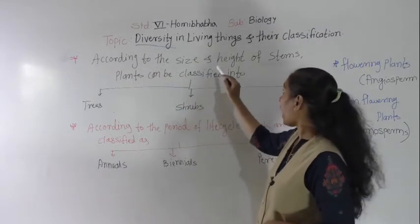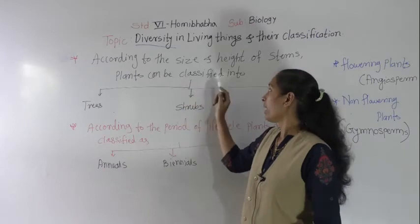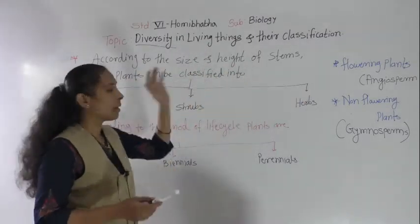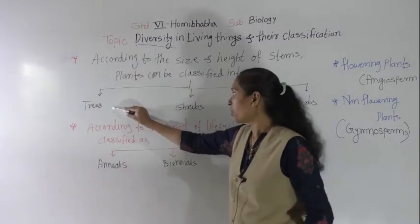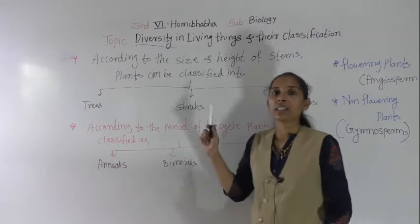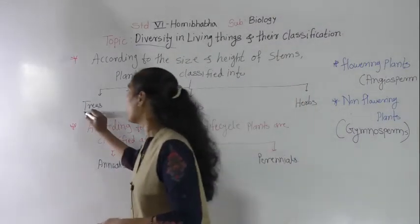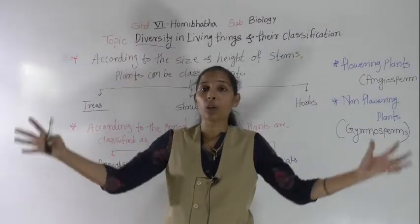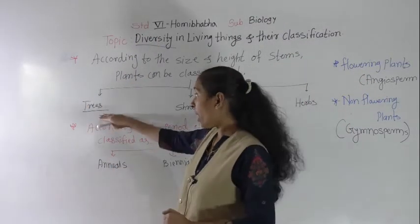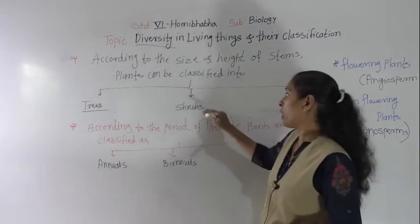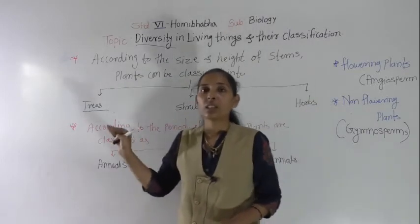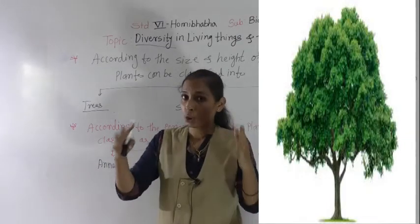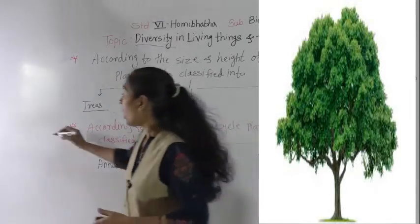According to the size and height of the stem, plants can be classified into three groups: trees, shrubs, and herbs. First, let's discuss trees. Trees are very huge compared to shrubs and herbs. A tree has a very hard, thick, and strong brown-colored stem and is very tall. The branches of the trees are above the ground — there is a great distance between the ground and the branches.